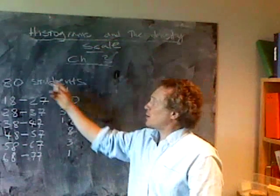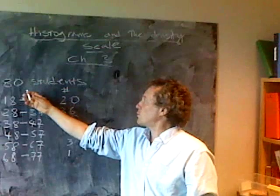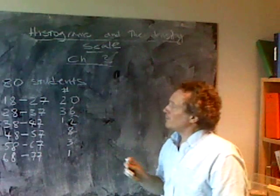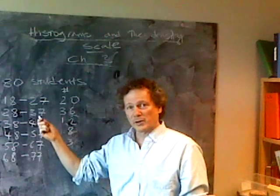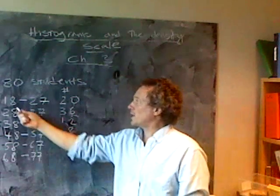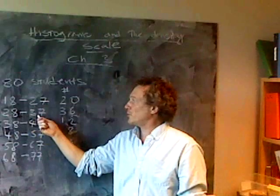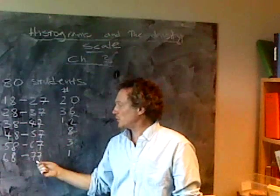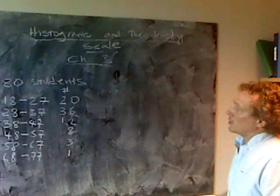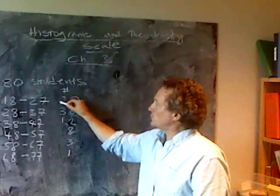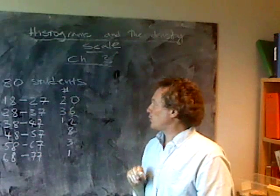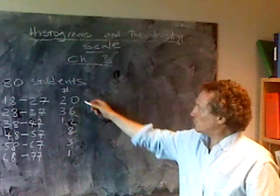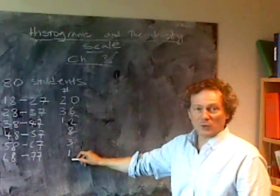So I thought I'd go over quickly a problem to show you how to set up a histogram and why the density scale is the appropriate thing to use rather than using straight population or percentage. What I've got here is an example: imagine that you have a program that has 80 students enrolled in it. The 80 students are broken down by age category. So I've got 18 through 27, 28 through 37, 38 through 47, 48 through 57, 58 through 67, 58 through 77. And here are the numbers: 20 students are between 18 and 27, 36 are between 28 and 37, and so on. So 20, 36, 12, 8, 3, 1.